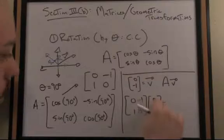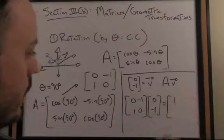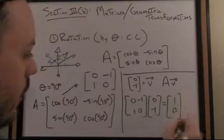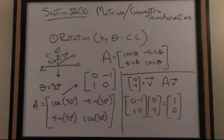So, (0, -1) dotted with (0, -1) results in (1, 0). Let's see if that actually works then.